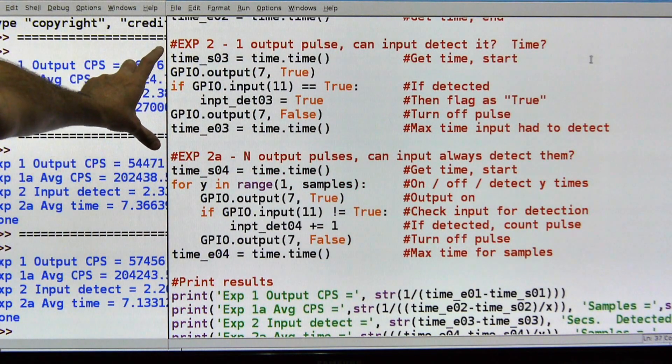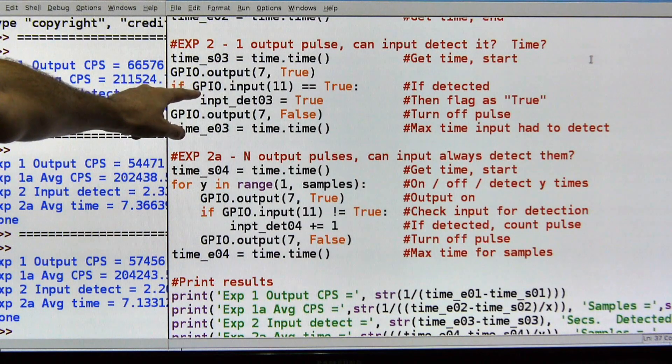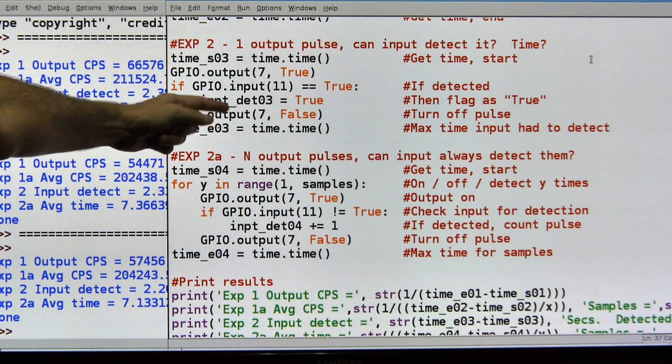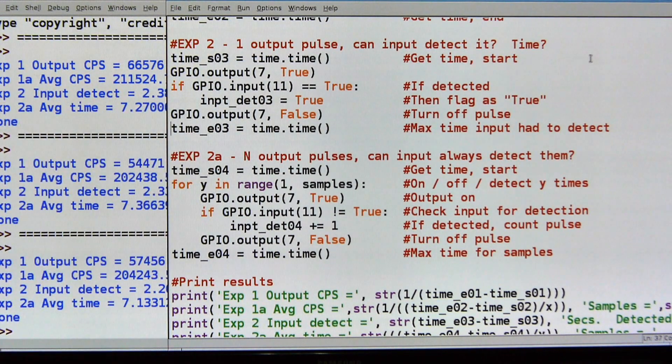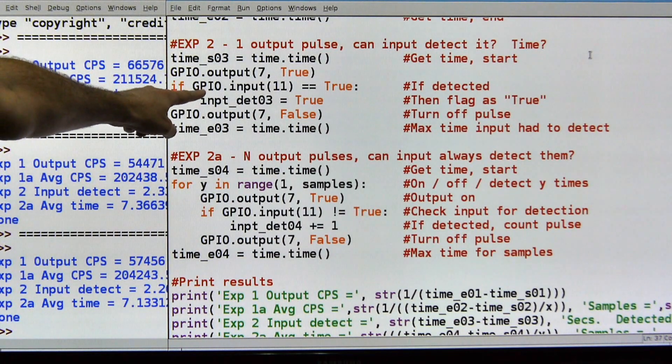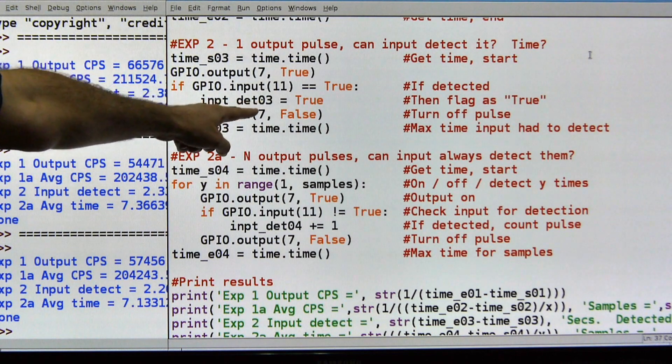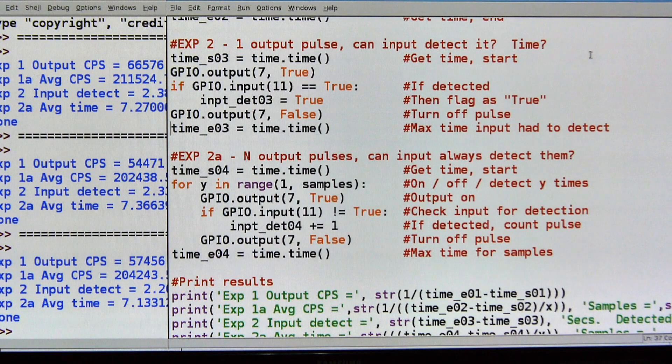The next experiment is pretty much the same, except that I'm going to run it the samples number of times, so 10,001 times. I'm going to run this loop 10,001 times. I'm going to grab the time, so I'll know the average amount of time it took to run those samples. The next one is a little bit more complex, because I want to know the time it takes to turn the output pin on, the time it takes to detect that with an input pin, and then turn the output back off.